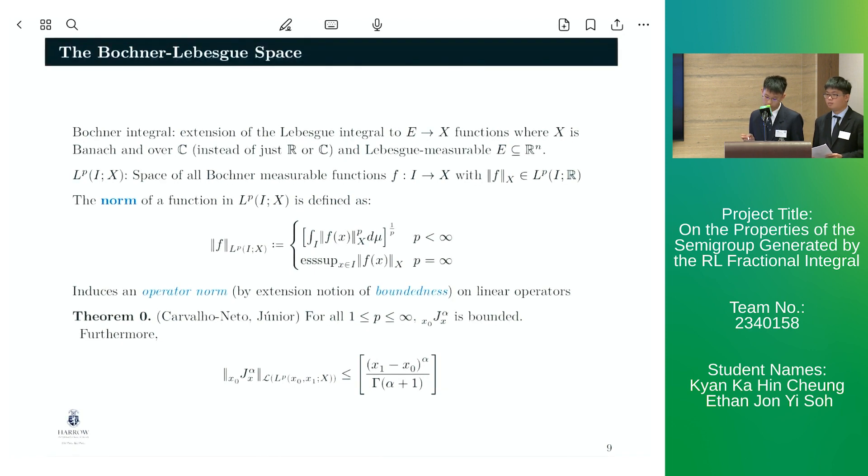The norm of a function in Lp-Bochner-Lebesgue space is defined as the following, and this induces an operator norm on linear operators. Notably, we have the following result by Carvalho-Neto and Junior, where it states an upper bound for the operator norm of j-alpha.